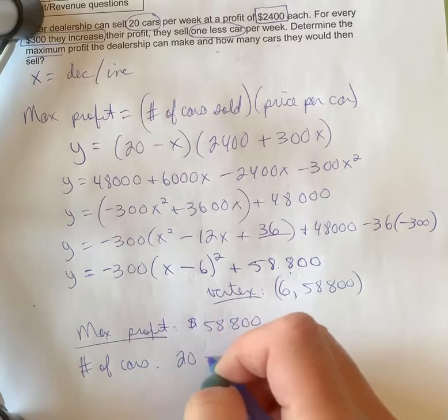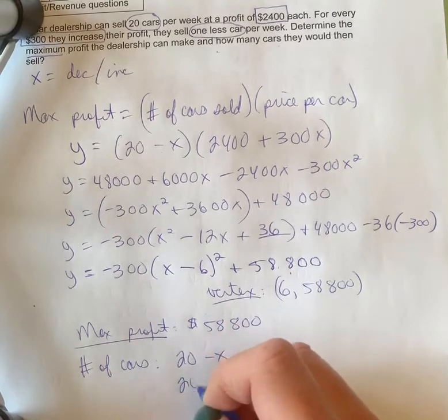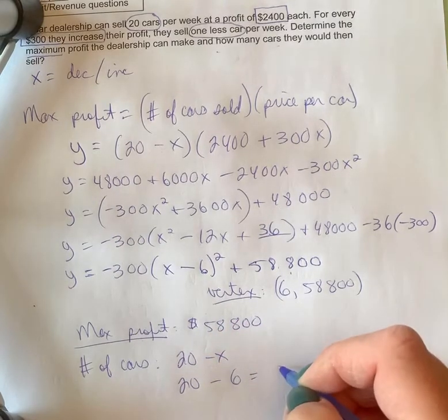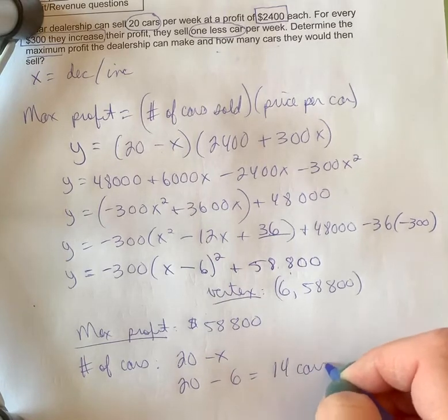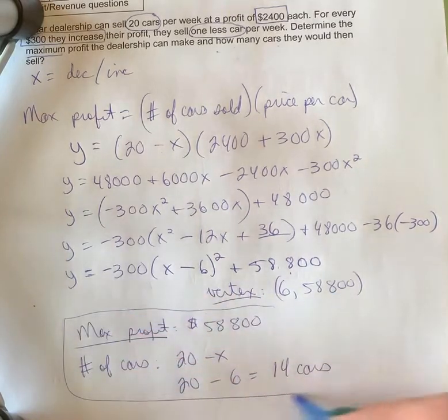How many cars, number of cars, is represented by 20 minus x, so that's 20 minus 6 equals 14 cars. So there is my answer.